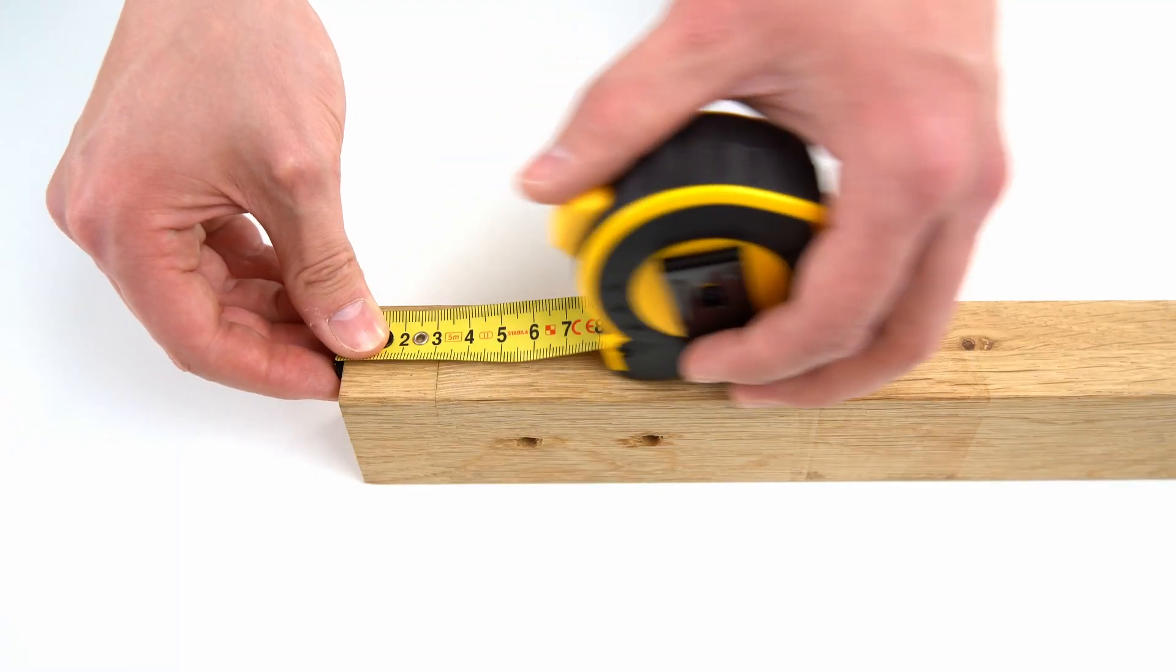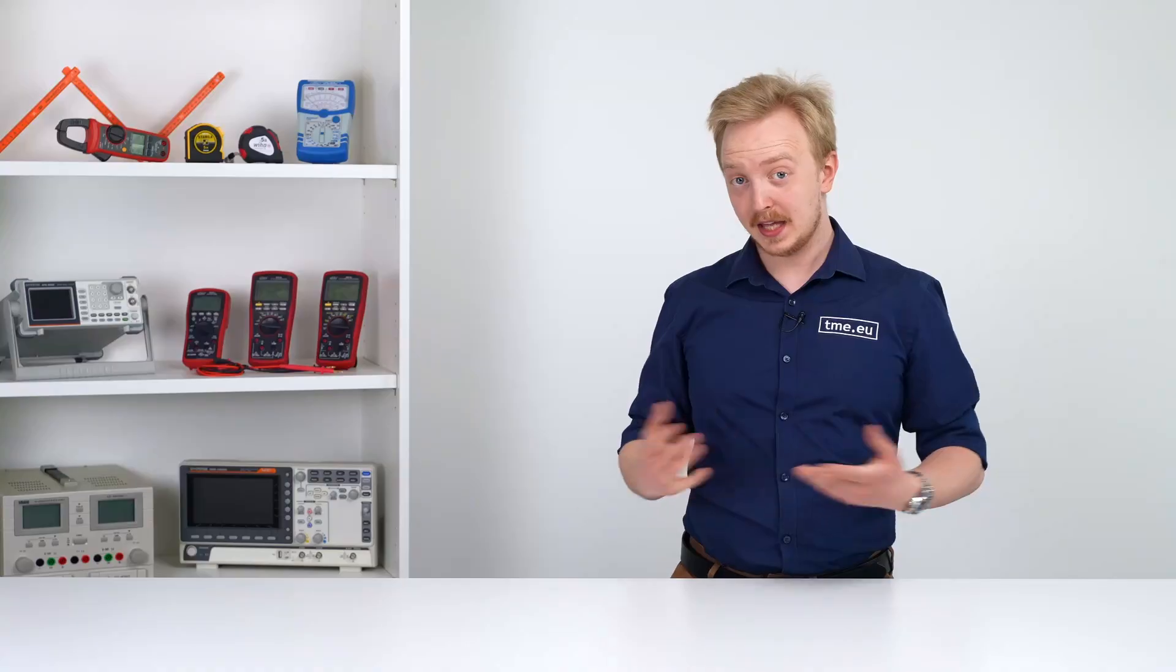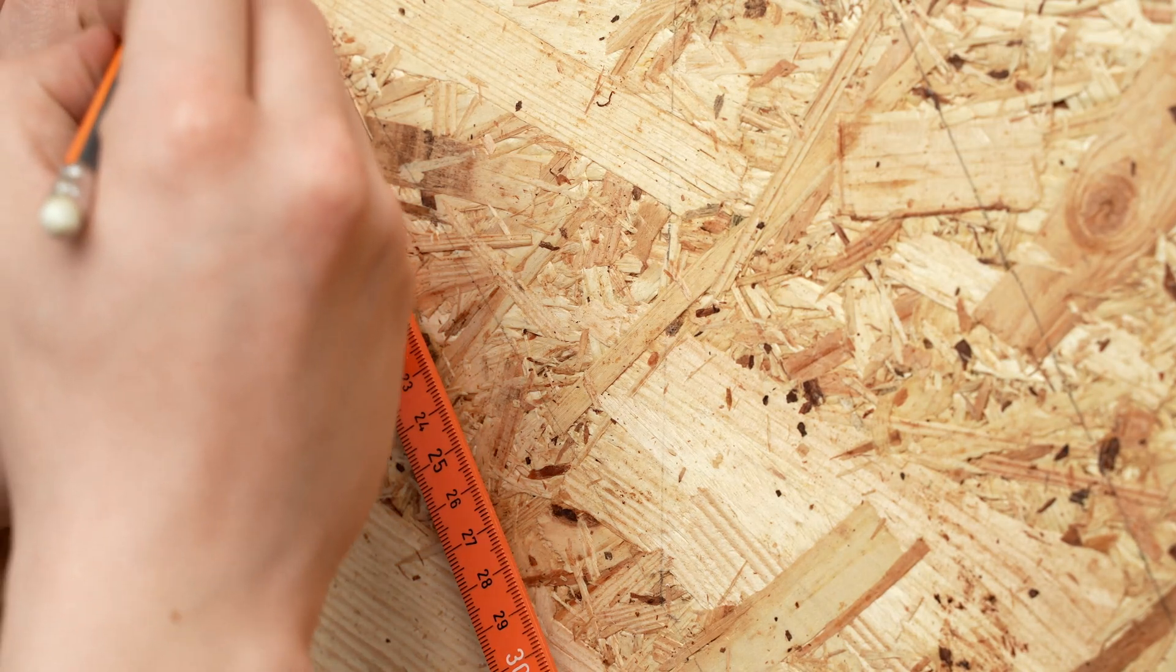The most versatile and good for mobile applications is a measuring tape. Compact size and ease of use, that's why it's so popular. Another useful tool is a folding ruler. Not as compact but stiff, so better for marking a straight line.